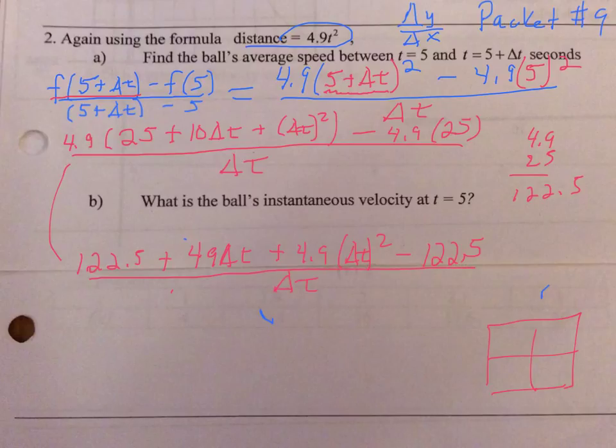Now at this point, if you are doing these problems correctly algebraically, all the terms left after you cancel out what you can on the numerator, every term should have a delta t left in it. That's kind of a check to see if you're doing the problem correctly.